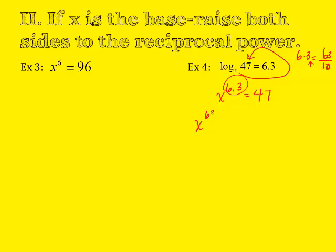So x to the 63 tenths, I've got to multiply by its reciprocal, so 10/63 equals 47 raised to the 10/63 power. On the left, this cancels, it's just x to the first power, which is my goal. On the right, I plug this in the calculator, 47 to the 10/63 power. And when you do that, you get 1.84.